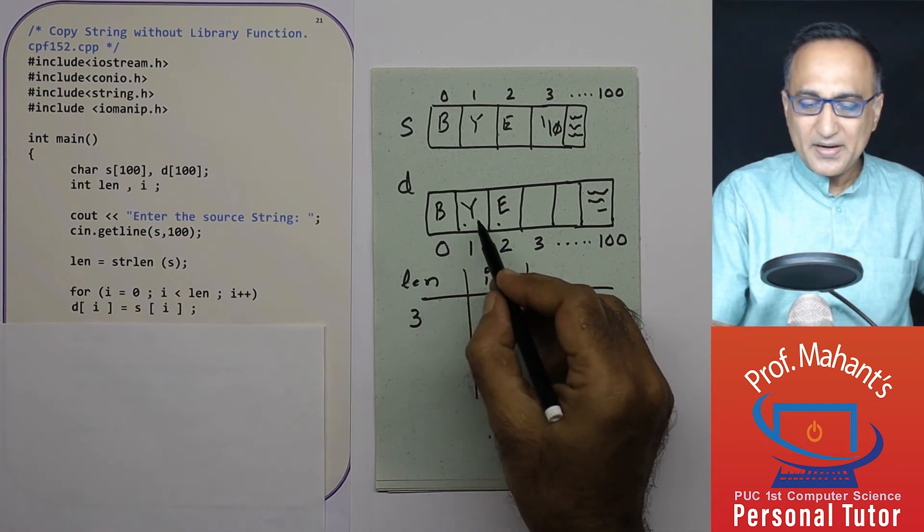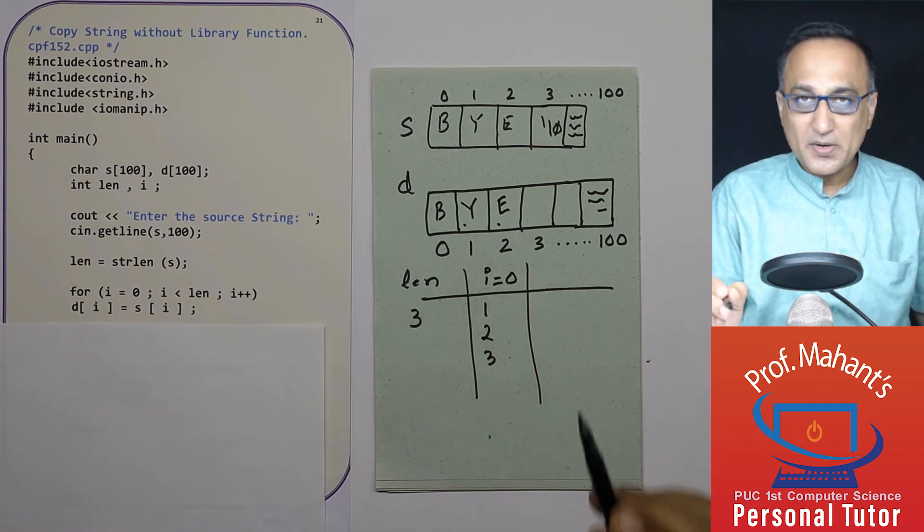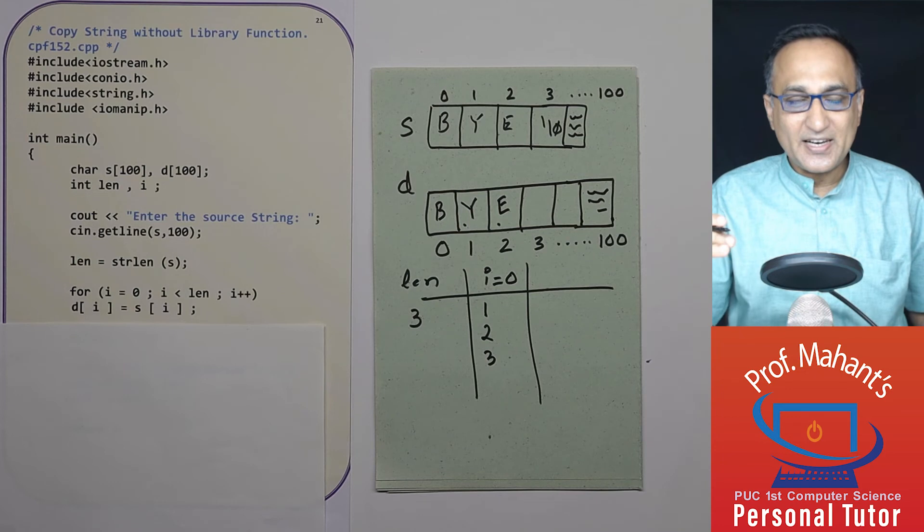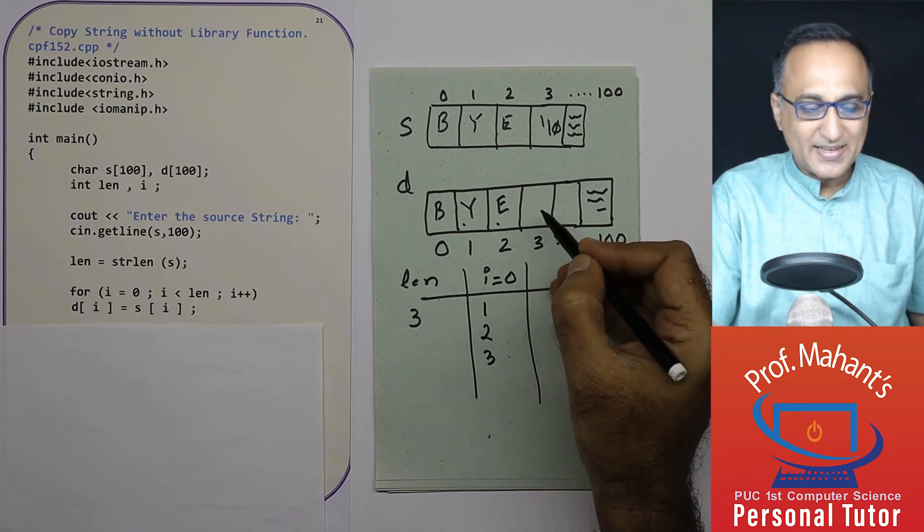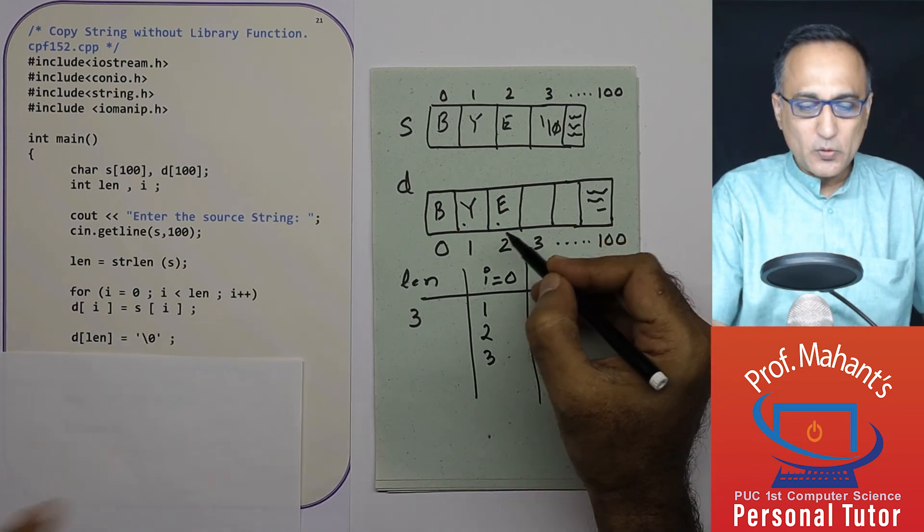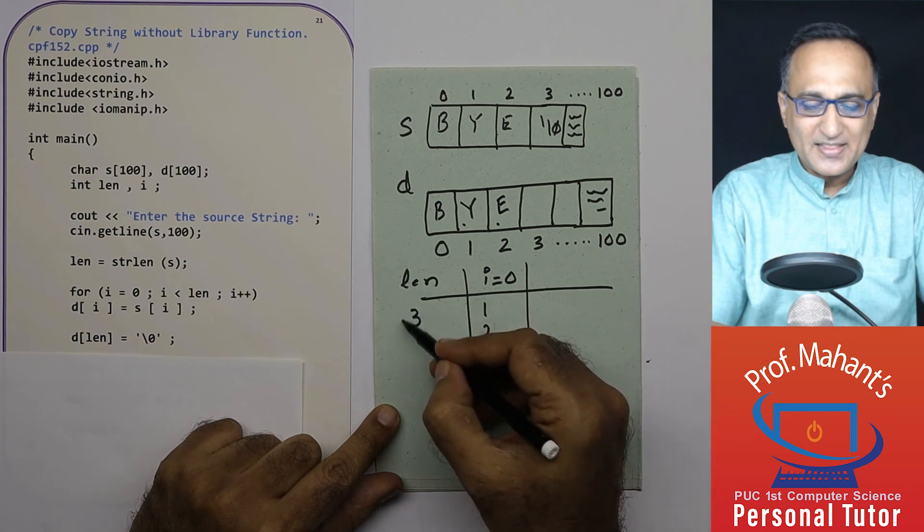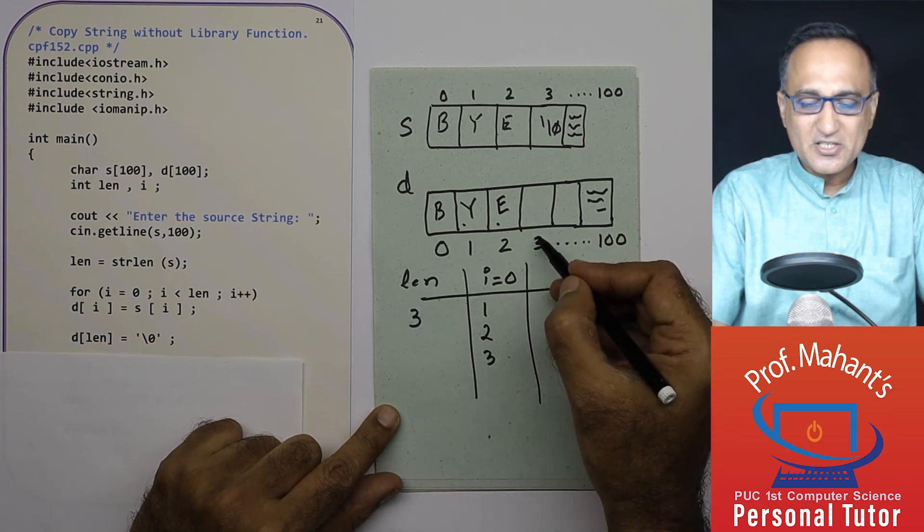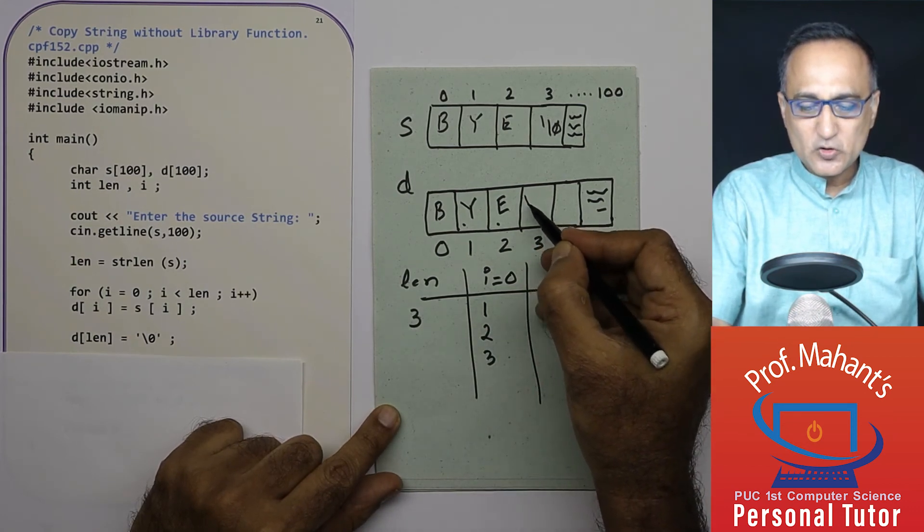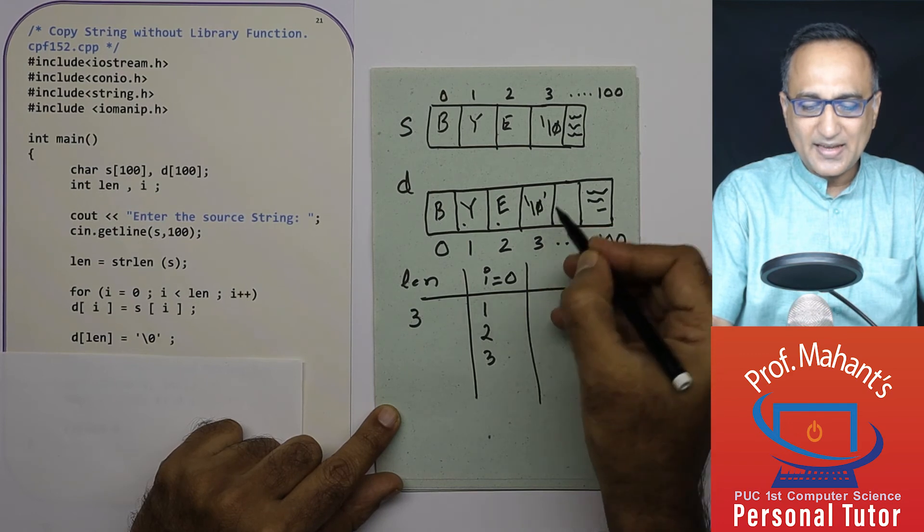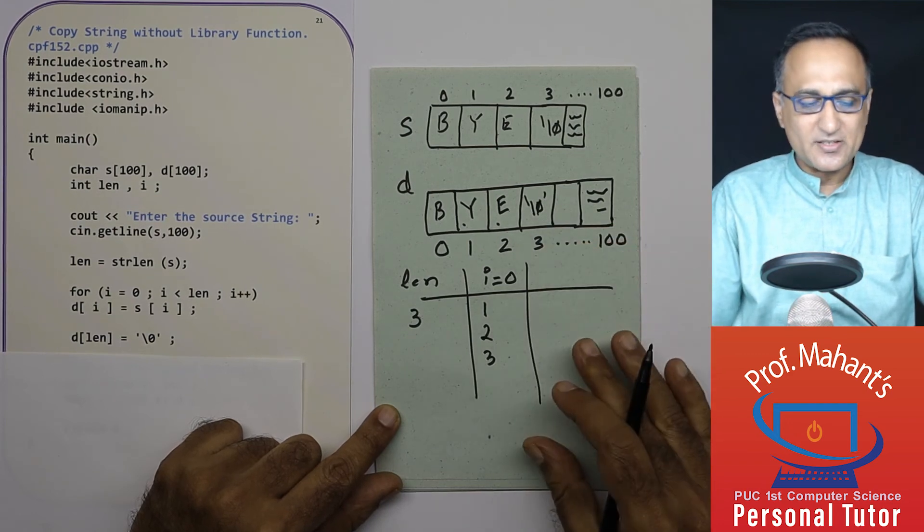Now I have copied the characters of the string but it is my job since I am manipulating at the level of a character to add the null character here. So what I am doing is d of length, length is three. D of three is this particular position. So I am incorporating the null character here.